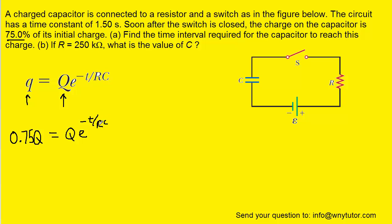If we look at this equation carefully, we can divide both sides by capital Q to cancel it out. Then we want to solve for the time t. If we look at part A, it asks us to find the time interval required for the capacitor to reach this charge. The problem is that t is stuck in the exponent, so to get it down, we need to take the natural log of both sides.